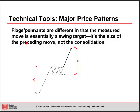Flags and pennants are different in that the measured move is essentially a swing target — it's not the size of the consolidation itself, but the size of the preceding move. This is one reason why shorter-term traders really like these moves: they often tend to be quite powerful, and if you can identify them, you can get very dramatic gains in a short period of time. In this case, you had a big move into the flag — the pole of the flag — which was much larger than the consolidation itself. The consolidation would show much lower volume, and then on breakout, the implied move would be the same magnitude as the pole, measured from the low of the consolidation.